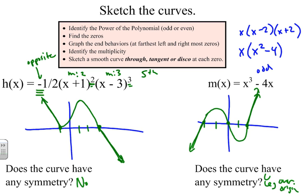We went through four different examples of how to sketch curves using the zeros. The process is: identify the degree and whether it's odd or even, then identify the end behaviors, identify the multiplicities, and then sketch a smooth curve that either passes through or is tangent at each zero. Hopefully this helps — good luck!